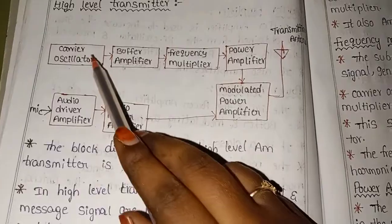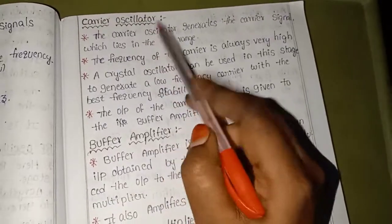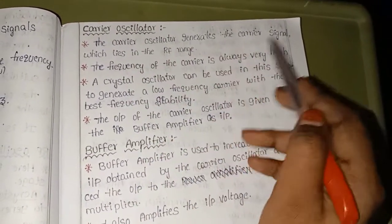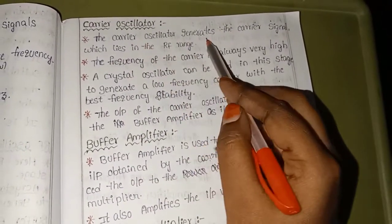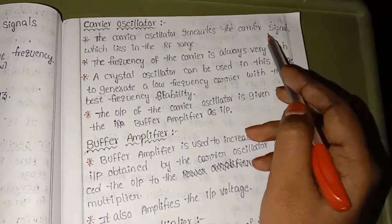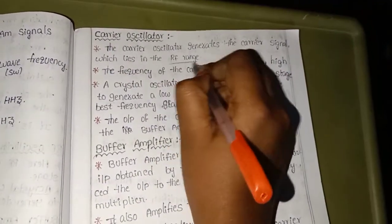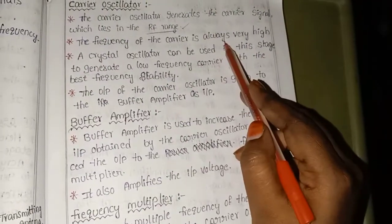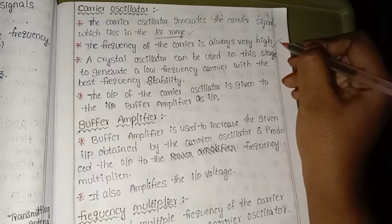First is the carrier oscillator. The carrier oscillator generates the carrier signal which lies in the RF range. The frequency of the carrier signal is always very high.